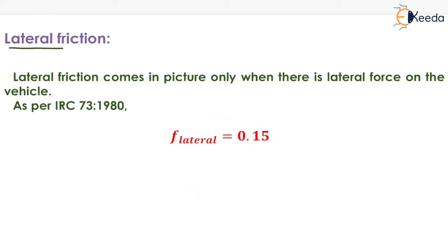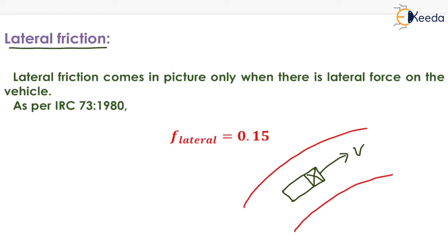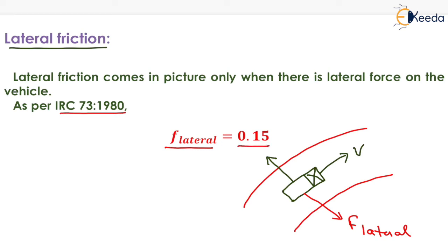The next topic is lateral friction. When a vehicle is moving along a horizontal curve, there is a tendency of the vehicle to move in the outward direction. To counteract this outward movement, a frictional force comes into play which balances the outward movement — this is known as lateral friction. The coefficient of friction in the lateral direction is known as F-lateral, and as per IRC 73-1980 its value is 0.15. So the coefficient of longitudinal friction is 0.35 to 0.40, and the coefficient of lateral friction is 0.15.